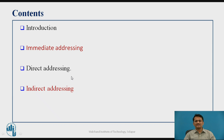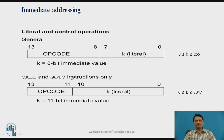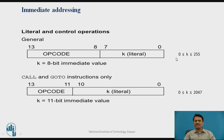Let us understand how we can access the operands. The first simple addressing mode is immediate addressing mode. In immediate addressing mode, the operand information is available in the instruction itself. There are two different types of instructions: one is a general instruction where you specify the operand information directly in the instruction.